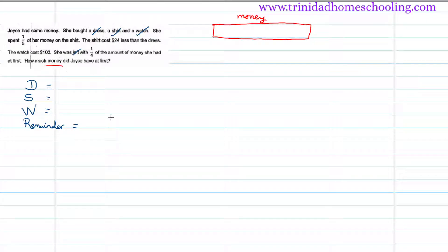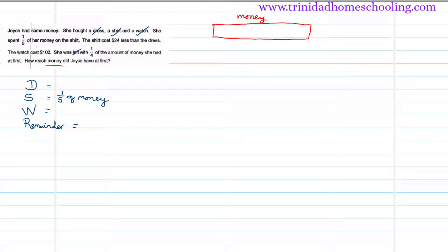Now let's put in the numbers. She spent one-fifth of her money on the shirt, so the shirt is one-fifth of her money — this is out of the whole.